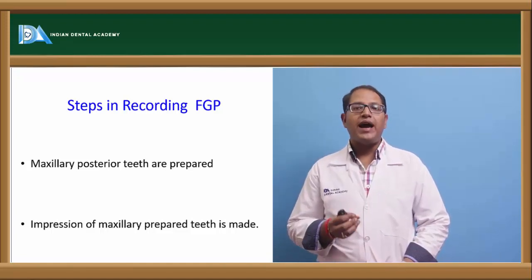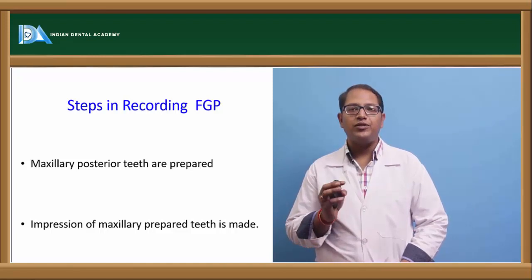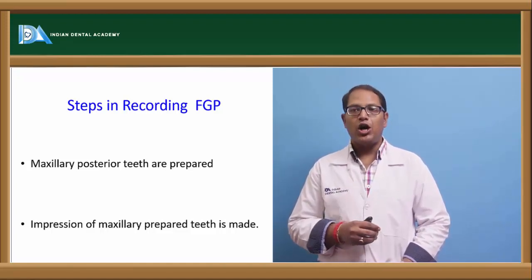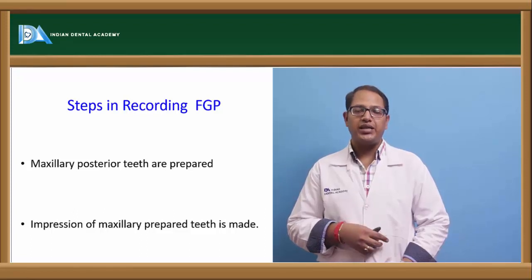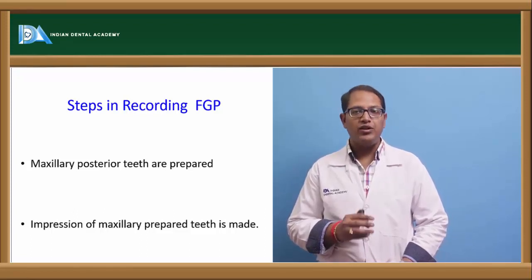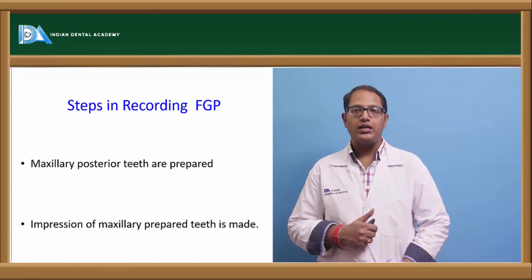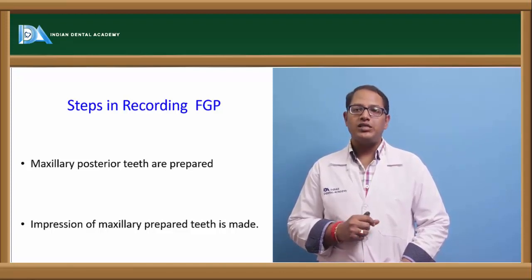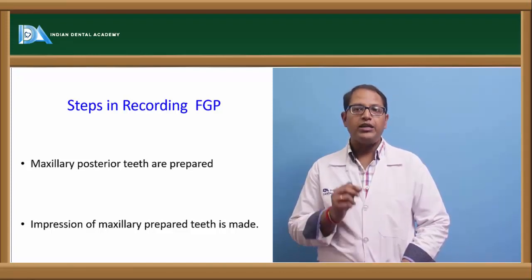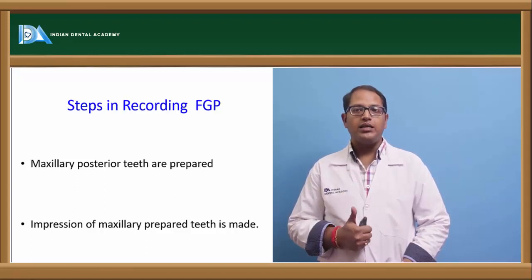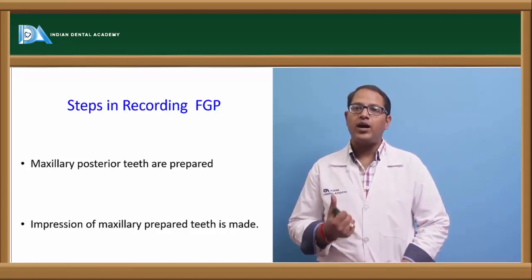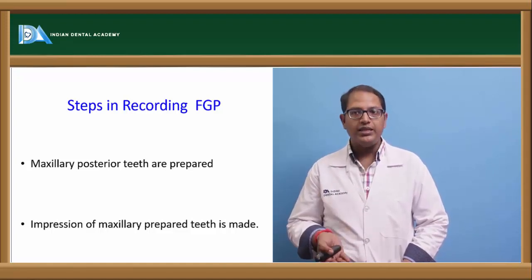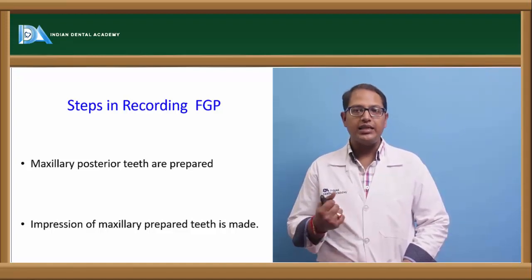If the following facts are understood, the value of FGP as a logical method of achieving precisely accurate occlusal contours will be obvious. First, the border pathways of the lower posterior teeth are dictated by two determinants: condylar guidance and incisal guidance — in other words, posterior determinant and anterior determinant.